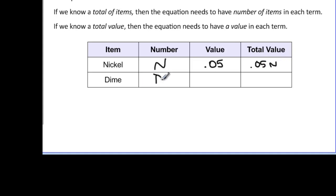If I wanted to know dimes, I don't know how many dimes I have. Its value is .10 and the total value would be .10 times the number of dimes that I have. So if I wanted to write an equation, I actually would have totals down here, would help me write my equations.